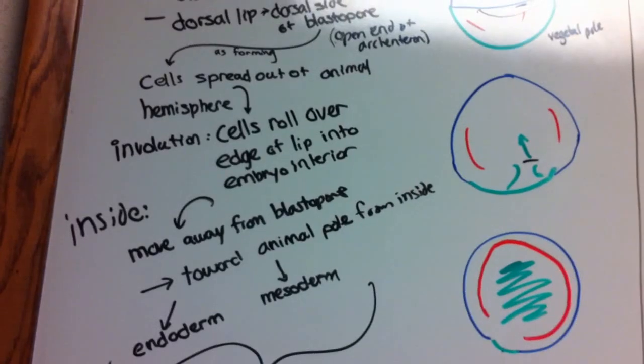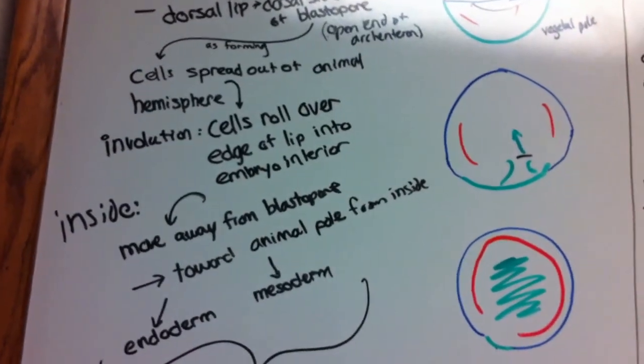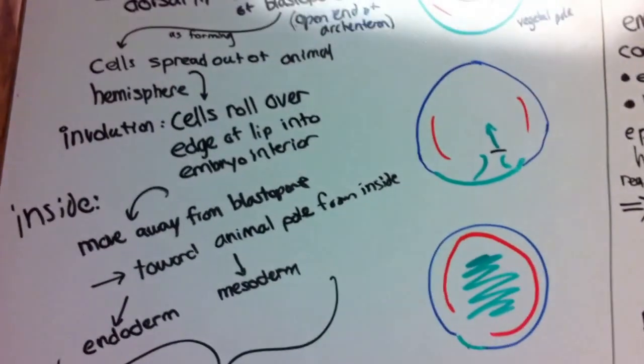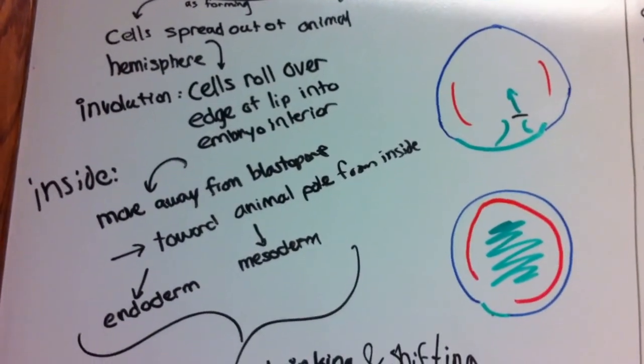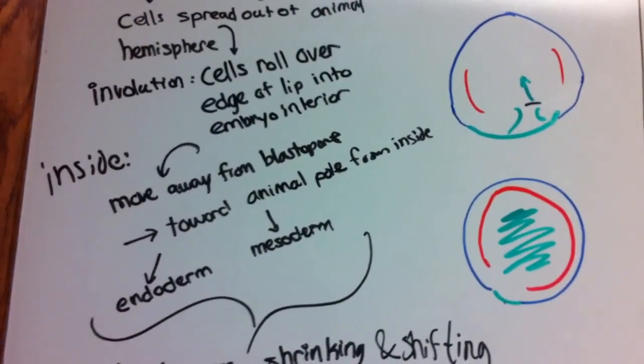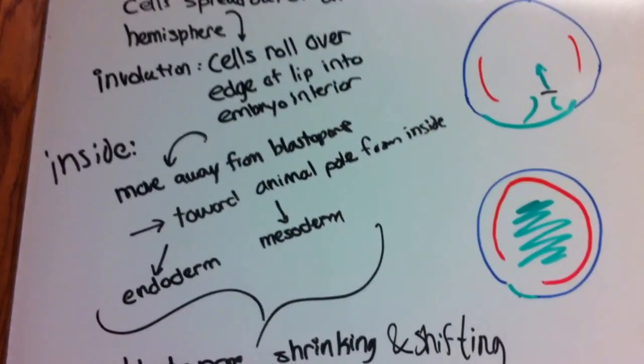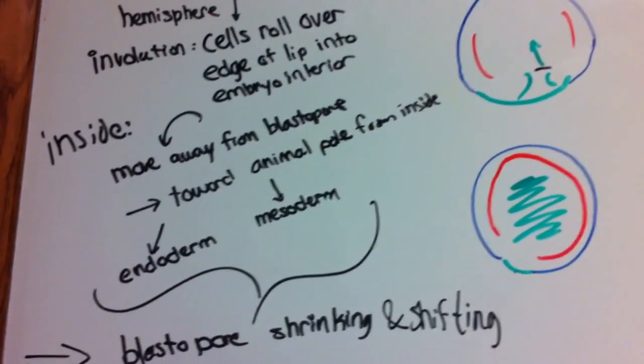Once the cells are inside, they start to move away from the blastopore from which they entered, and they move towards the animal pole from the inside. As they move towards the animal pole, they'll eventually reorganize and reform into the endoderm and the mesoderm.